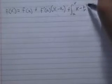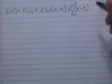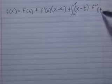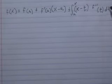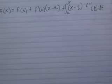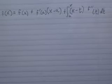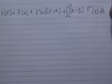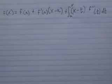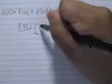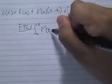Keep in mind that we must evaluate the second term from a to x. After some algebra, we arrive at f of x equals f of a plus f prime of a times x minus a plus the integral from a to x of x minus t times f double prime of t dt.